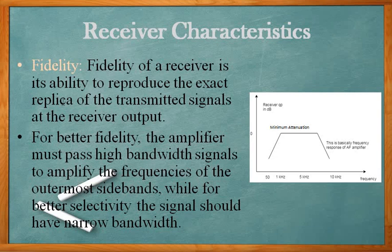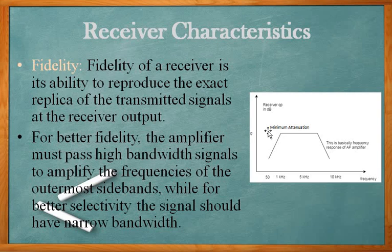These are the three characteristics of the receiver. For better fidelity, the amplifier should pass high bandwidth signals to amplify side band frequencies. For better selectivity, you need narrow bandwidth. There is a trade-off: fidelity requires wide bandwidth while selectivity requires narrow bandwidth. The graph shows that with high bandwidth signals and minimum attenuation, you get the fidelity characteristic.